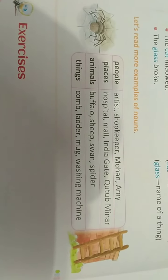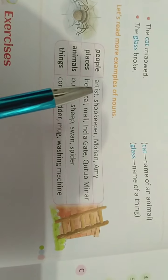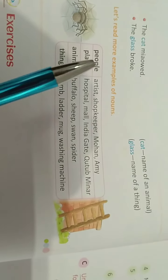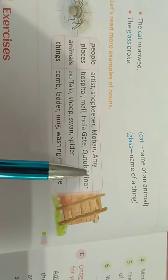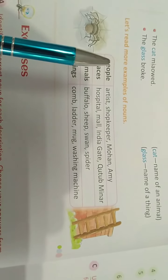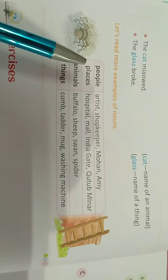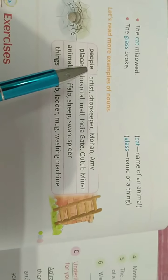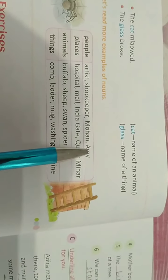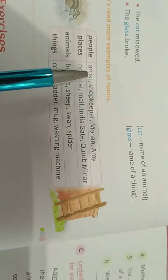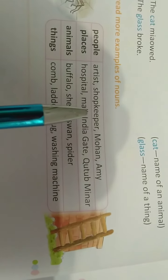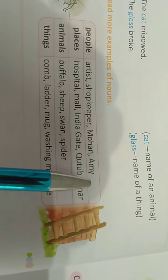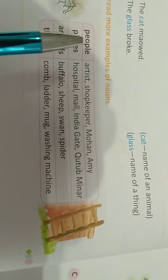And, one more column is given here. In these, we can find out some examples of noun. You can see, noun is the name of a person. It is given: people, place, animal, things. So, in each column some examples are given. That is people: artist, shopkeeper, Mohan, Amin — these are all names of people.